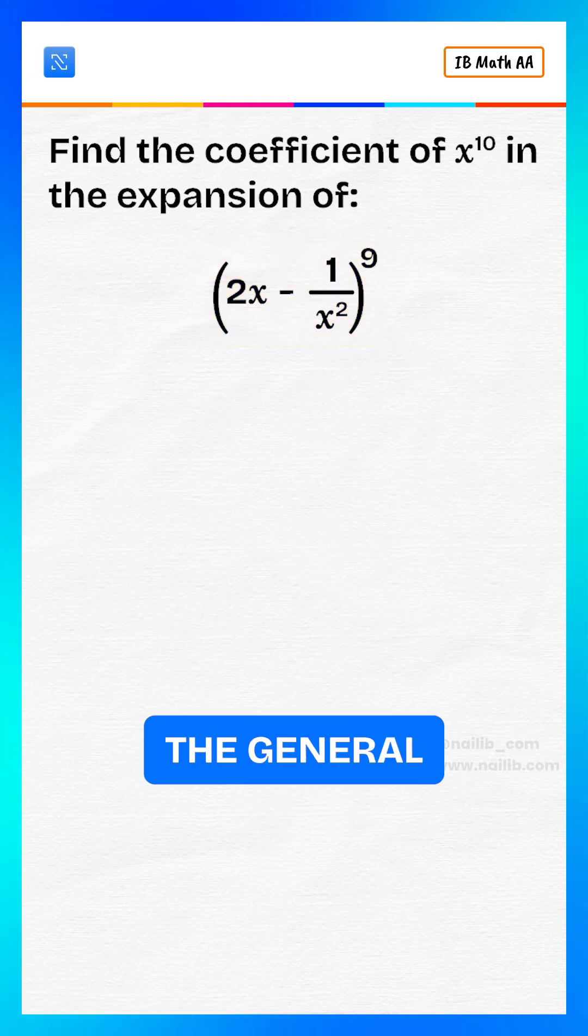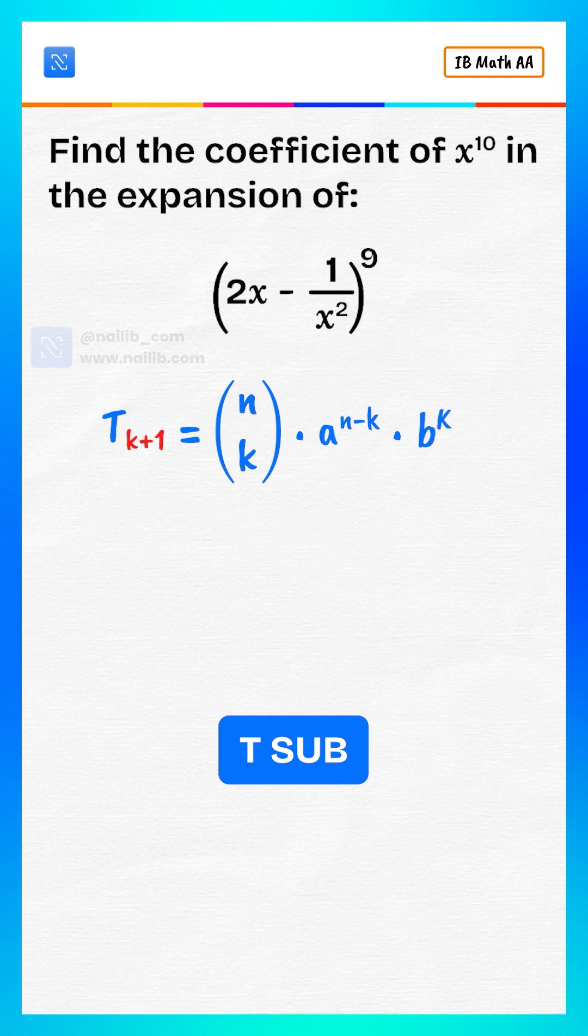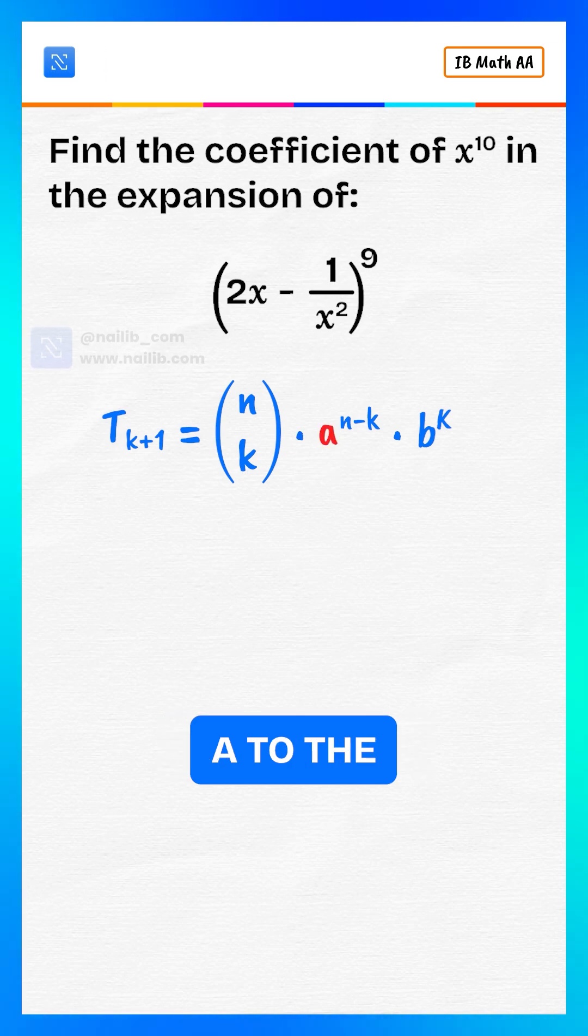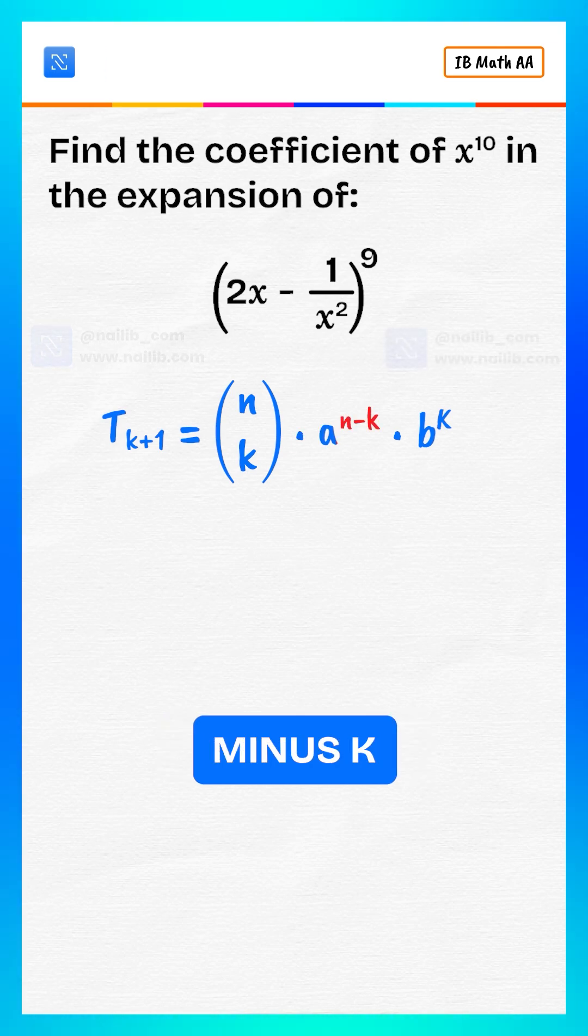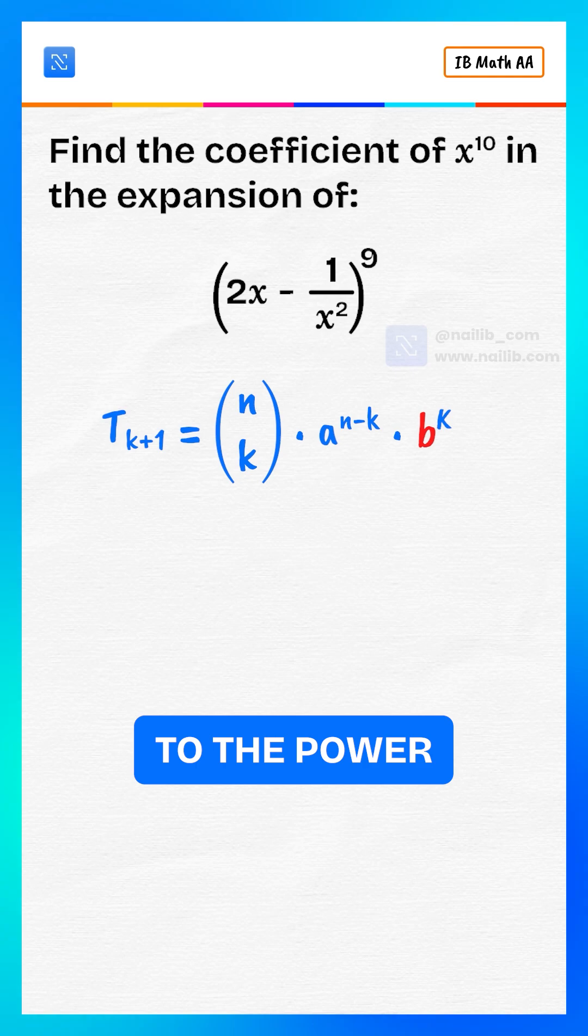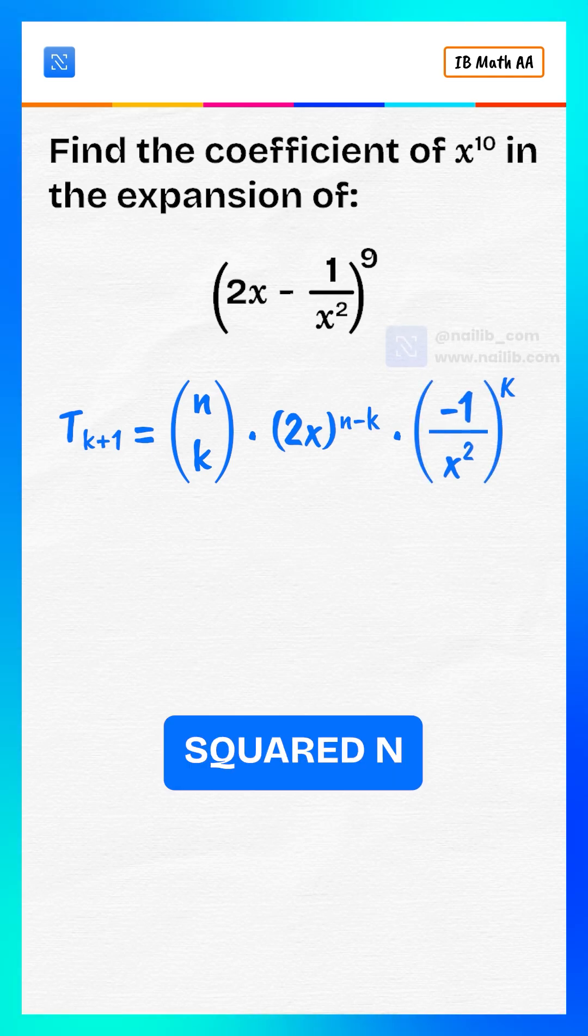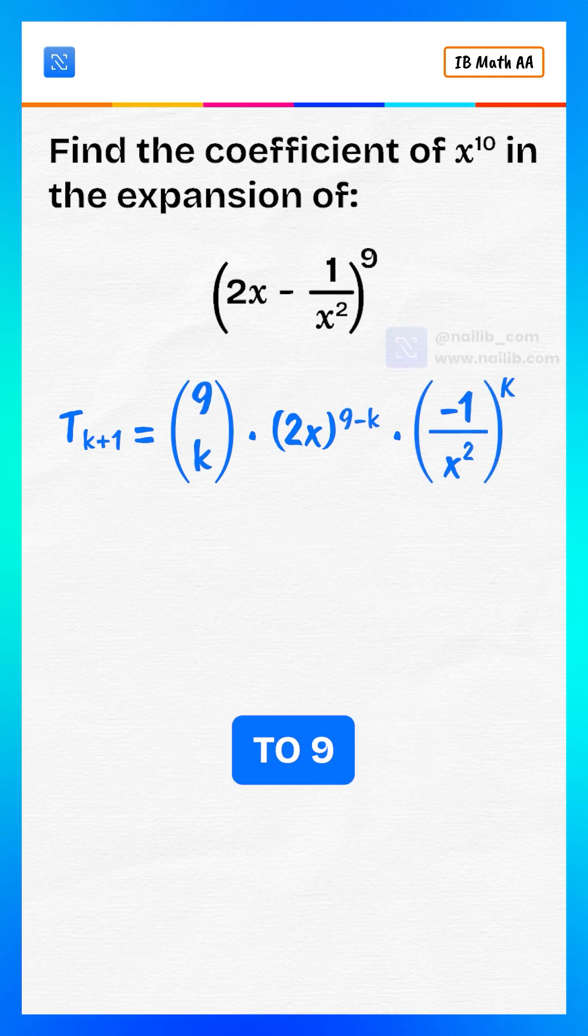Let's recall the general binomial expansion formula. T sub k plus 1 equals combination of n choose k, multiply by a to the power of n minus k, multiply by b to the power of k, where a equals 2x, b equals minus 1 divided by x squared, n equals 9.